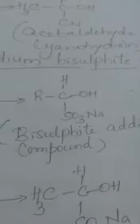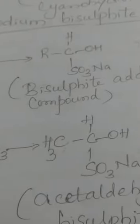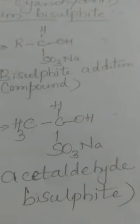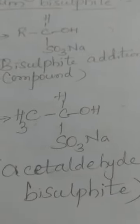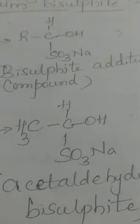Taking acetaldehyde CH₃CHO as an example: CH₃CHO reacts with NaHSO₃ in saturated solution. The product formed is CH₃CHOHSO₃Na, that is acetaldehyde bisulfite, which is a white crystalline precipitate. This is the second addition reaction.